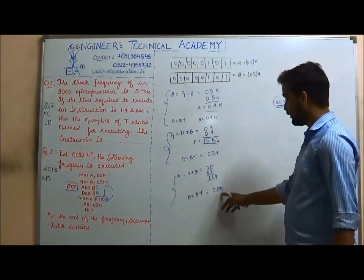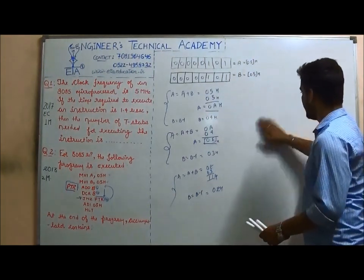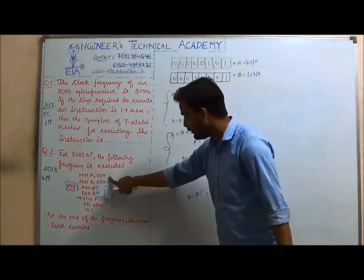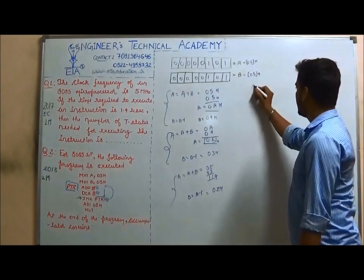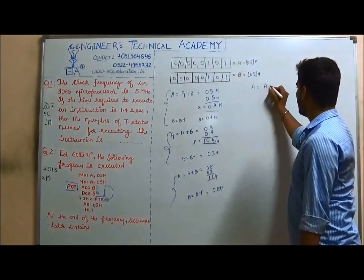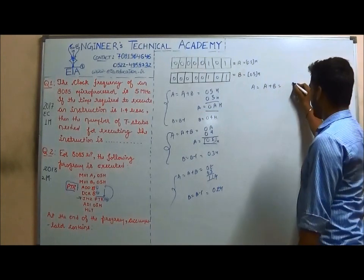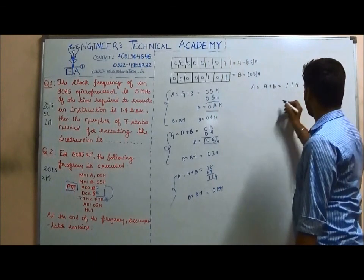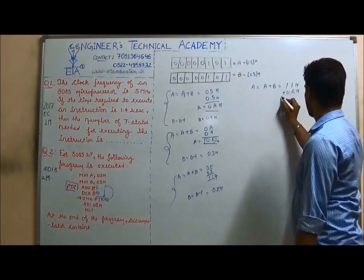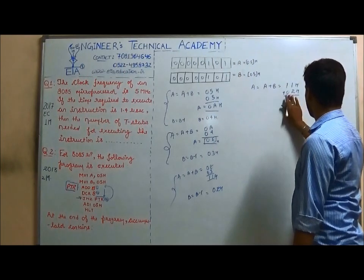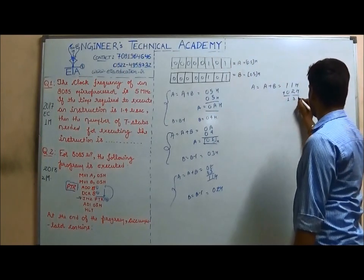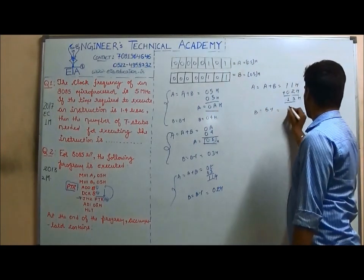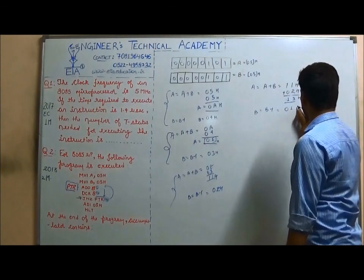The loop executes again. A = A + B = 11H + 02H = 13H. Then B = B − 1, so B becomes 01H. The loop will execute one more time since B is still non-zero.